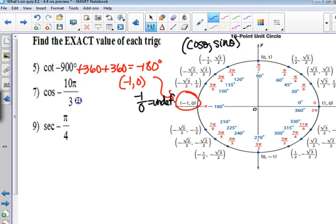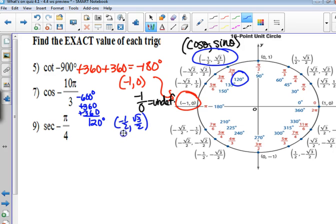Negative 10 pi over 3. If we change it to degrees, it's negative 600. If we add a couple 360s maybe, we get 120. That's coterminal. The ordered pair is negative 1 half, square root of 3 over 2. All we need is the cosine! That's the x value, so the answer is negative 1 half. Can I help you with one?